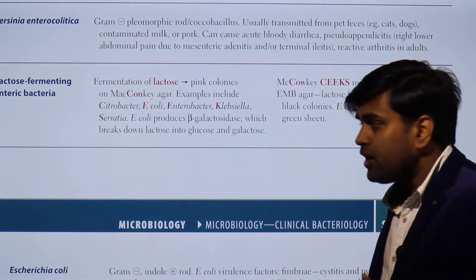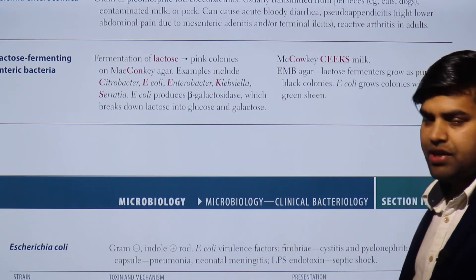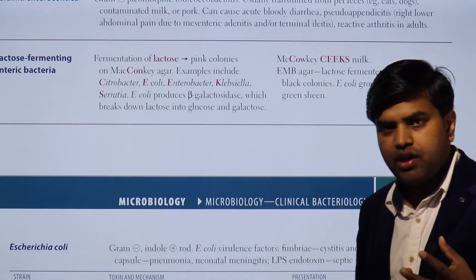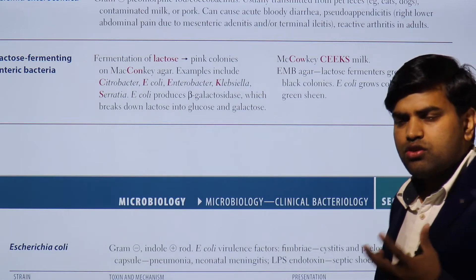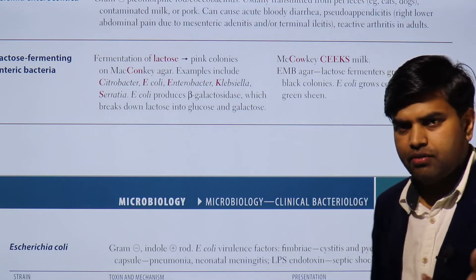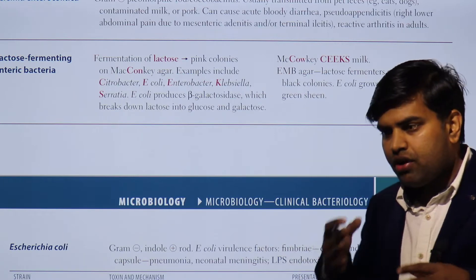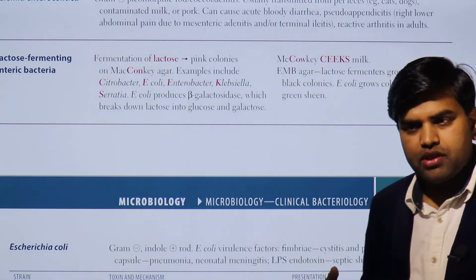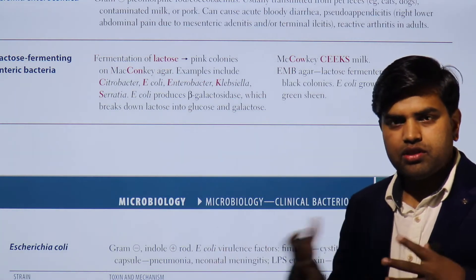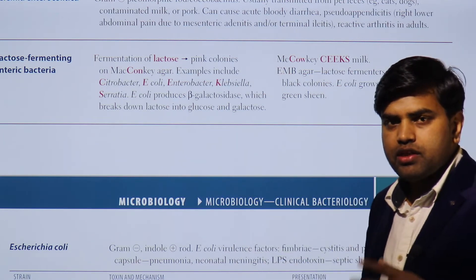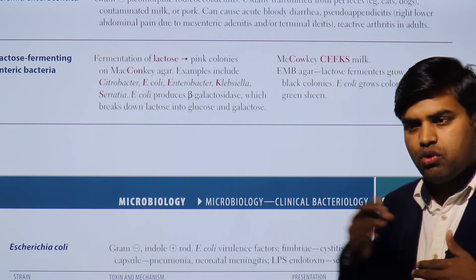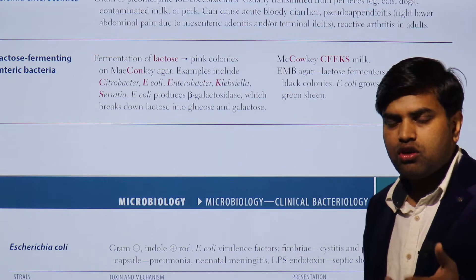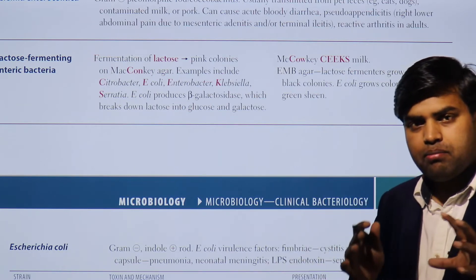Now moving forward to lactose fermenting enteric bacteria. They are normally found in the intestine and are also called coliform bacteria, which are used as an indicator marker for water pollution. If coliform bacteria are present in water, we say it is contaminated. Water quality is assessed by the presence of these lactose fermenting enteric bacteria.